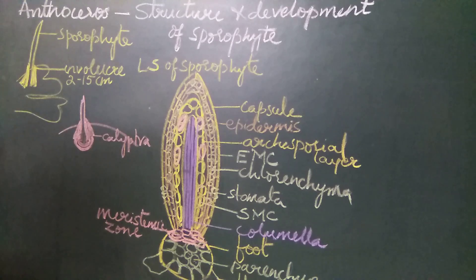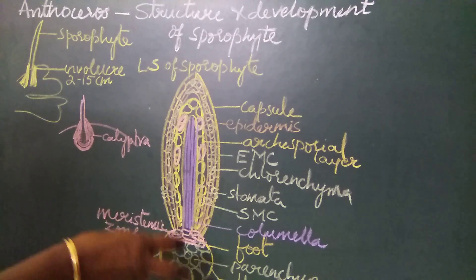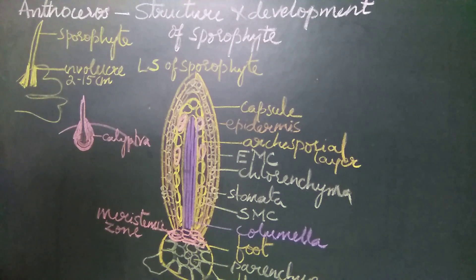Now we will see how the sporophyte—this complex structure of foot, meristematic zone, and capsule—develops from the zygotic cell. A single zygotic cell divides and then develops into the complete sporophyte.